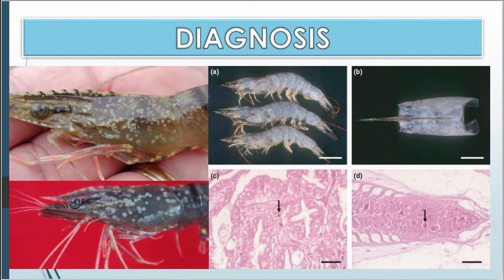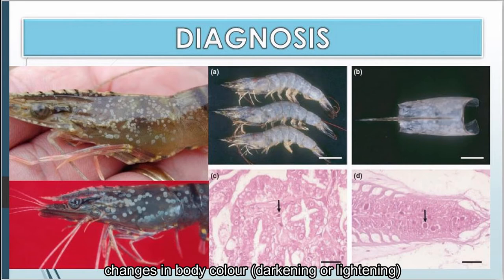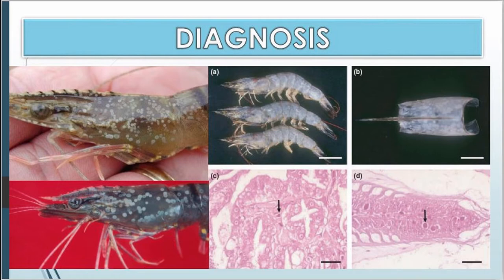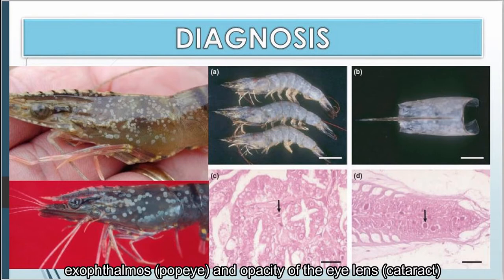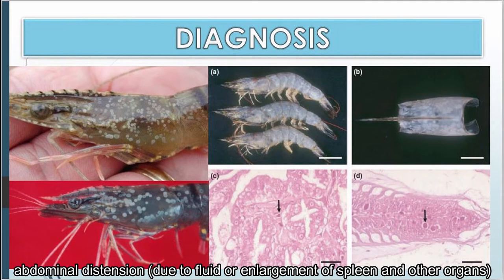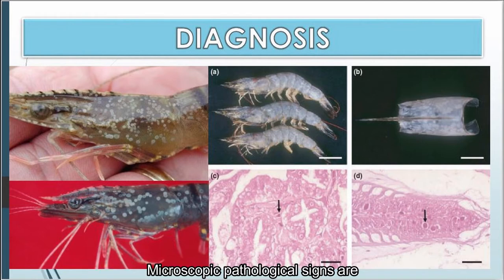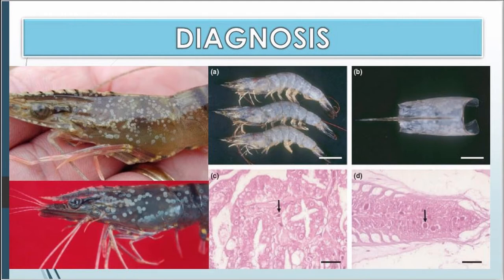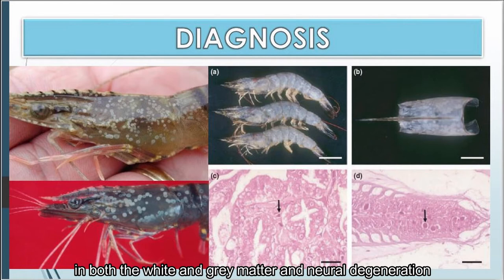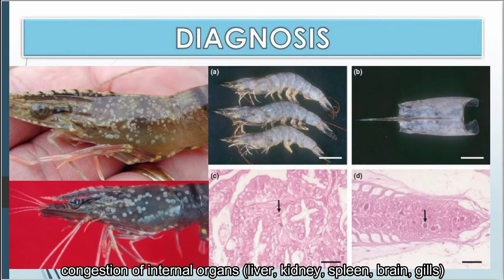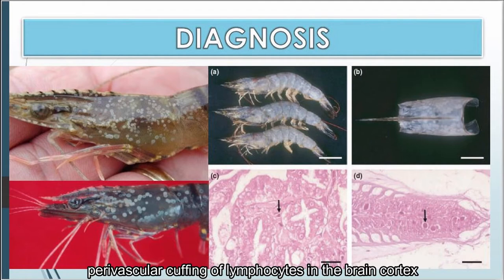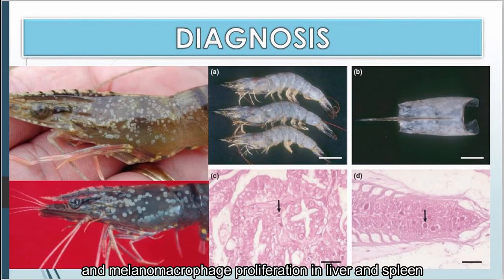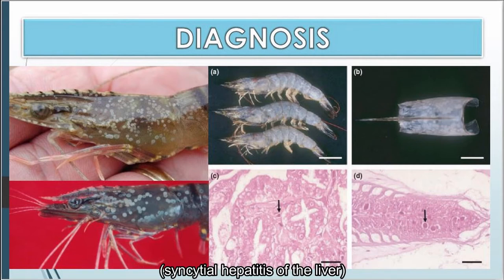Gross pathological signs include changes in body color, skin erosion resulting in hemorrhagic dermal lesions, scale protrusions, exophthalmus, opacity of the lens (cataract), and abdominal distension due to fluid or enlargement of spleen and other organs. Microscopic pathological signs include lesions in the brain such as edema, focal hemorrhages in the leptomeninges, capillary congestion in white and gray matter, and neural degeneration. Congestion of internal organs like liver, kidney, spleen, brain, and gills with foci of gliosis, perivascular cuffing of lymphocytes in the brain cortex, and melanomacrophage proliferation in liver and spleen are also observed. Formation of syncytia in the epithelium of hepatocytes and ocular inflammation including endophthalmitis and cataractous changes of the lens are noted.